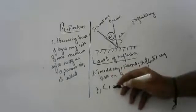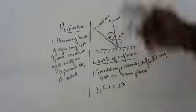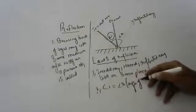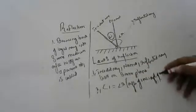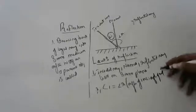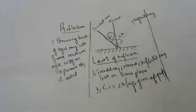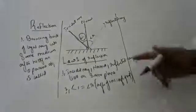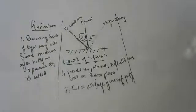The second law of reflection: the angle of incidence is equal to the angle of reflection. So if the angle of incidence is 30 degrees, the angle of reflection is also 30 degrees.